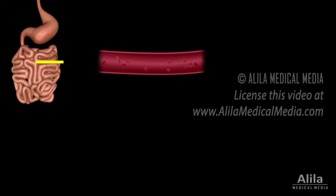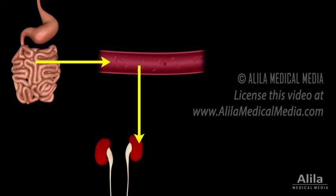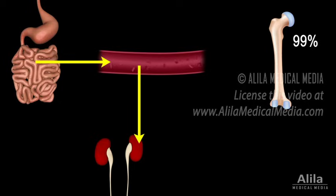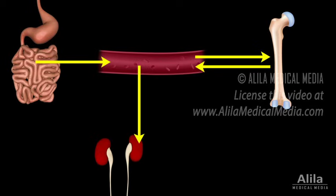Dietary calcium enters the blood through the small intestine and exits in urine via the kidneys. In the body, most calcium is located in bones. Only about 1% is in the blood and extracellular fluid. There is a continual exchange of calcium between blood serum and bone tissue.